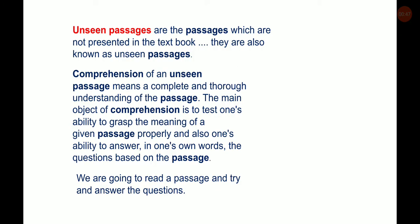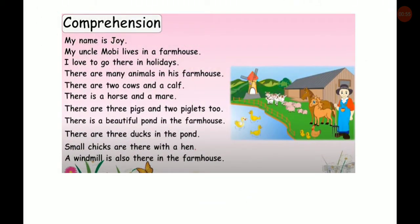We are going to read a passage and try to answer the questions. This is your first passage — I am reading it for you. There are three ducks in the pond. Small chicks are there with a hen. A windmill is also there in the farmhouse. So children, this is a passage.